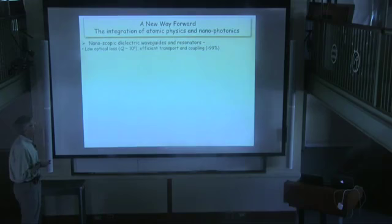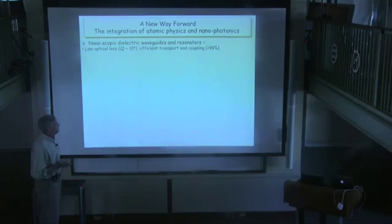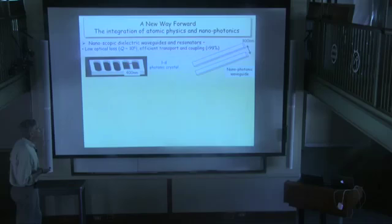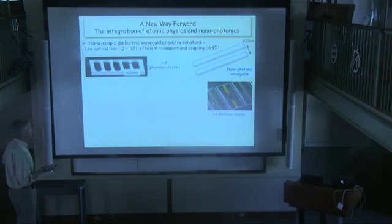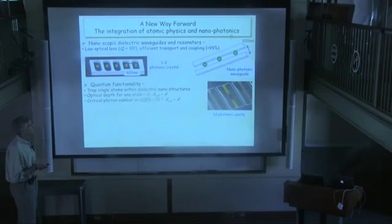The motivation is clear: 10 to the 6th is pretty straightforward to get for quality factors in these little dielectric structures; 10 to the 7th has been demonstrated. You can get efficient input-output coupling. Cary Valhalla in his microspheres has measured 99.97%. So there are just all kinds of different dielectrics. Metal is evil — no plasmonics. What we'd like to do is give these remarkable technical wonders quantum functionality by putting atoms in them.